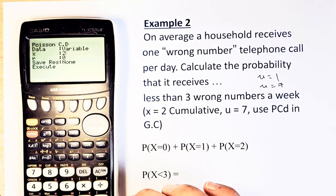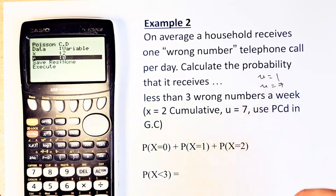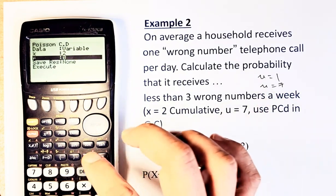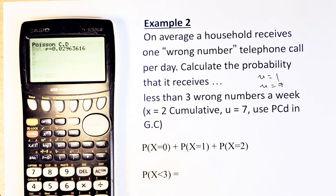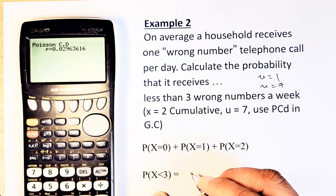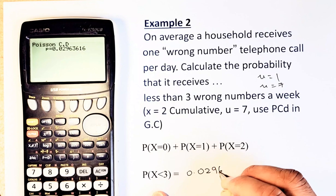And then your μ is what you have done. μ = 7. Because once a day, seven a week. So μ is going to be seven. And then press the Execute, and Execute. And the probability of X less than 3 means 0, 1, 2. It's 0.0296.